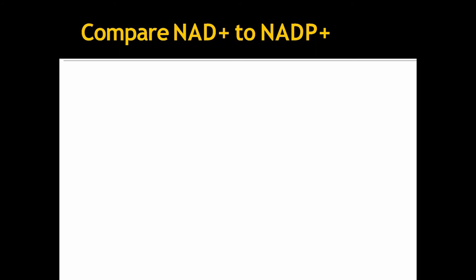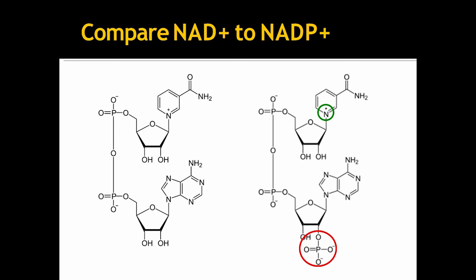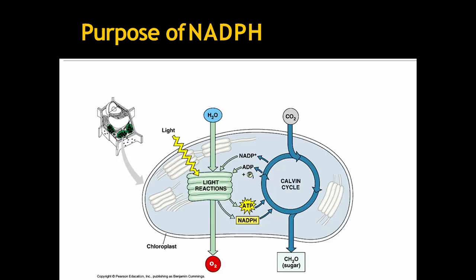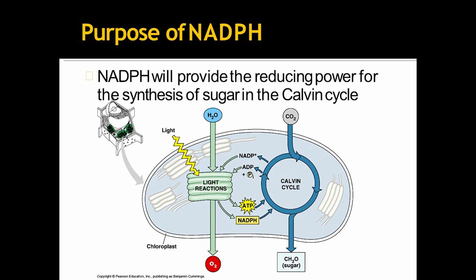Now, let's compare between NAD plus and NADP plus. This is the structure of NAD plus. This is the structure of NADP. Look at the red circled zone where OH is replaced by one phosphate group. Now, what is the purpose of this NADPH formed in that electron transfer chain? NADPH will provide the reducing power for the synthesis of sugar in the Calvin cycle.